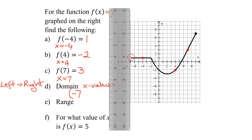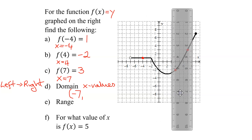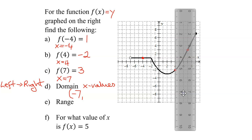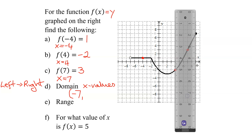If it was a solid dot, I would include it — I'd use a square bracket. So my domain starts at negative 7. And where does it go to? I keep moving from left to right, I still have a graph, there are still points on the graph. The graph keeps going but gets to this point and stops. The largest x value I get to is right here, and its x value is 9. So my domain goes to 9. Since there is a point at x equals 9, I use square brackets. So there is the domain of this function.